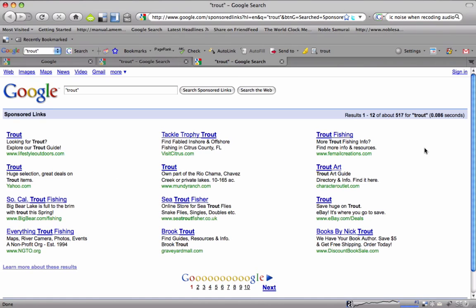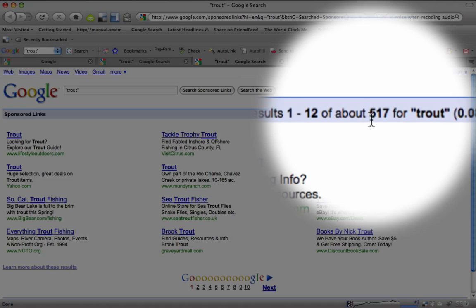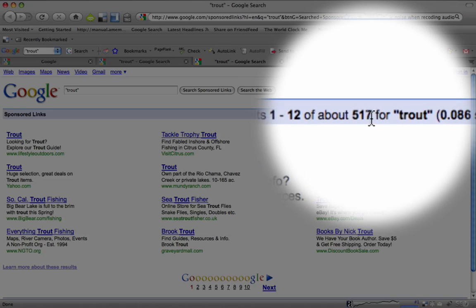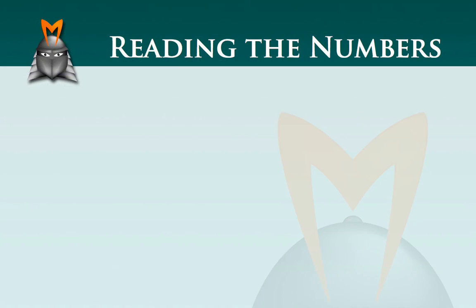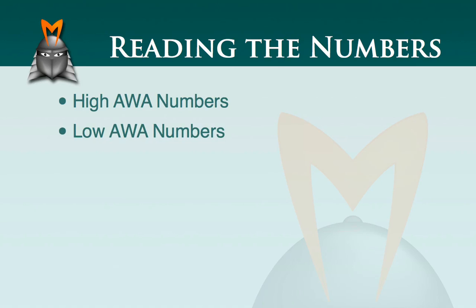Looking in the browser now, we can see 517 advertisers for the keyword 'trout.' Now that we know what the numbers are, we need to know how to read them — we're either going to get high numbers or low numbers.